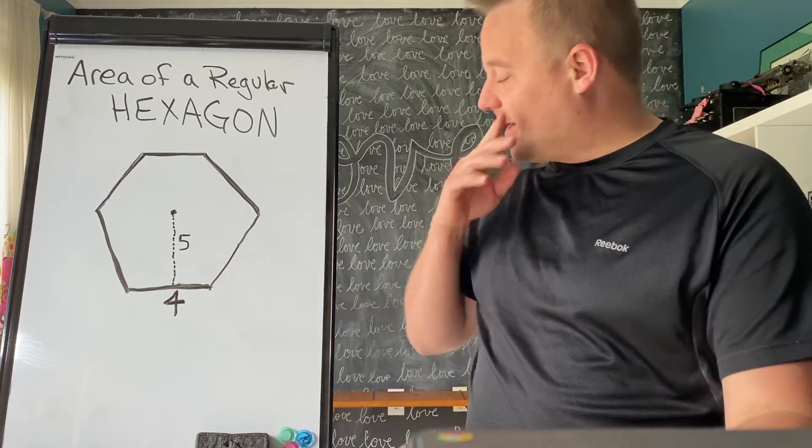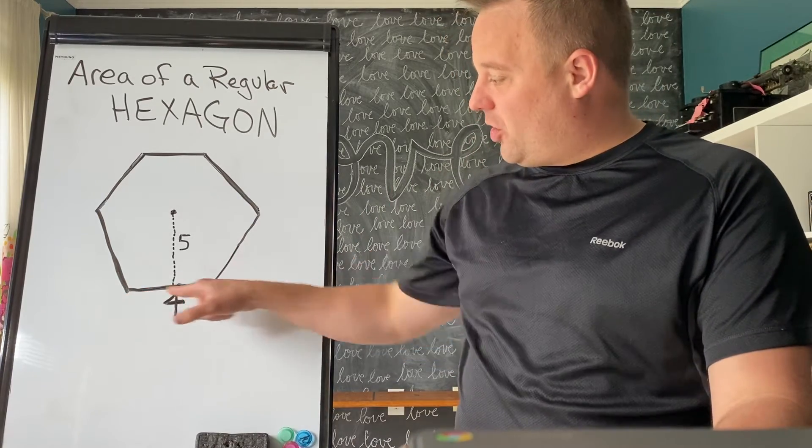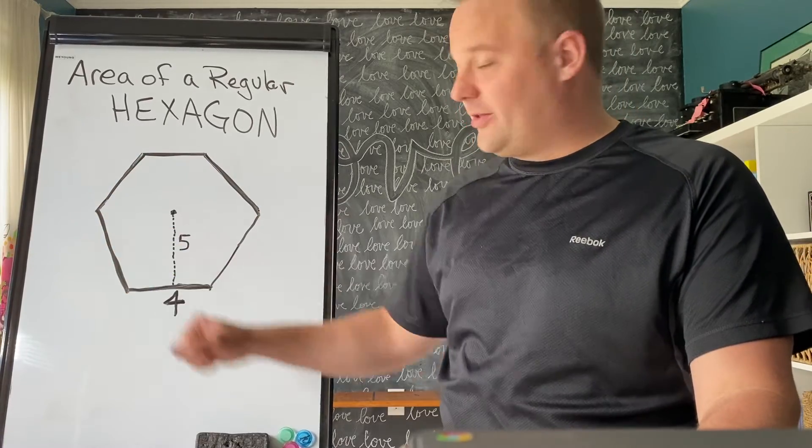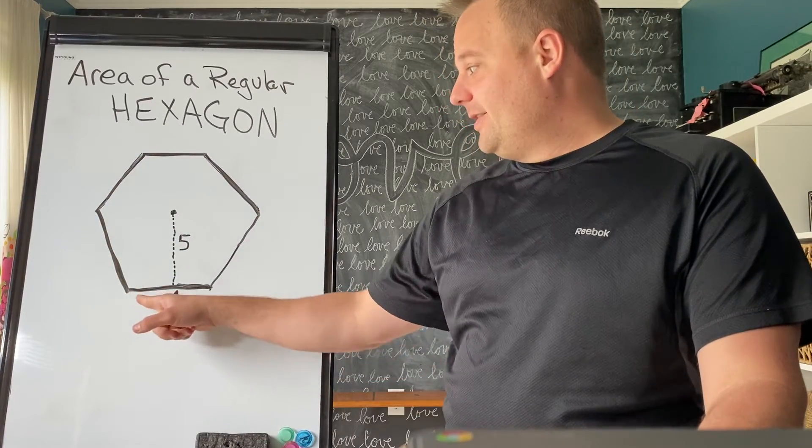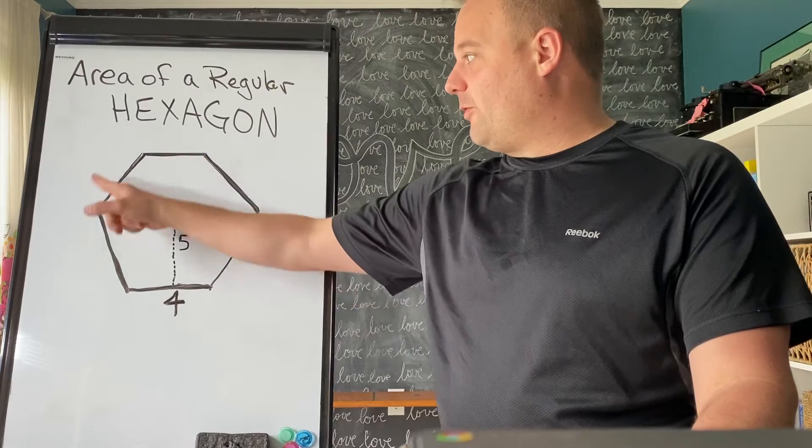So a regular hexagon - what the word regular means is that all these sides are equal. So this is 4, 4, 4, 4, and 4.